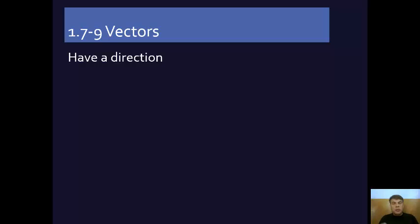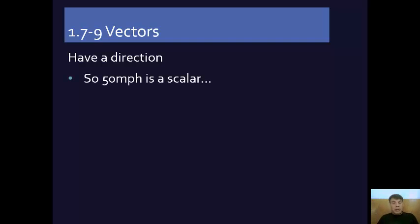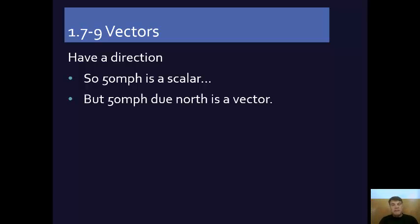But a vector is when I attach a direction to it. If I say I'm going to meet you 10 miles north of here — that's a vector. 10 miles per hour is a speed, that's a scalar. But if I say I'm going to go 10 miles per hour north, that's a vector. 50 miles per hour is a scalar; 50 miles per hour due north is a vector.